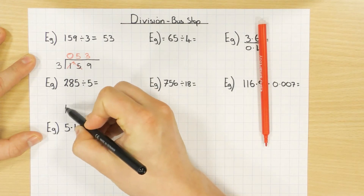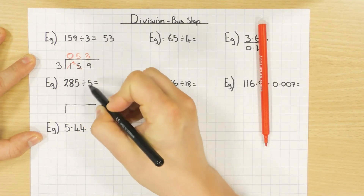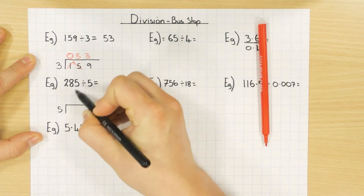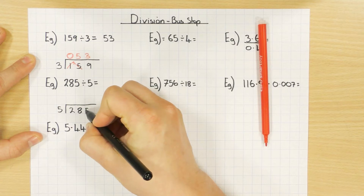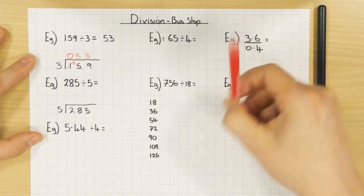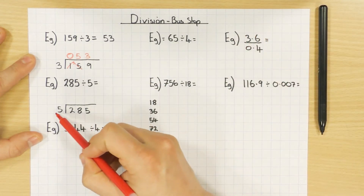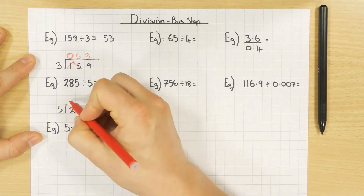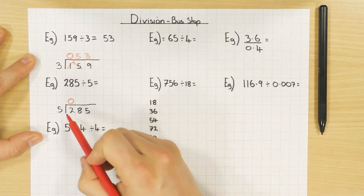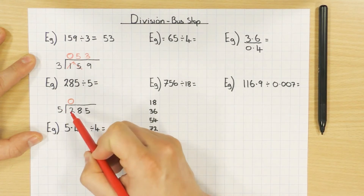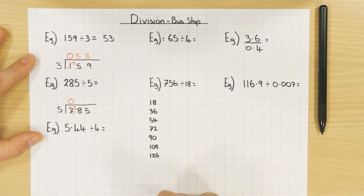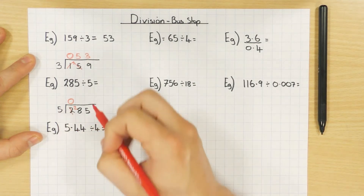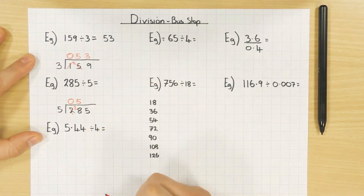Let's look at the next one. Draw your bus stop: dividing by 5 goes on the outside, and 285 goes on the inside. I have 2 — how many times does 5 go into 2? It doesn't, so it's 0 with 2 left over. That now becomes 28. How many 5s go into 28? Well, 5 times 5 is 25, so it goes in 5 times with 3 left over.